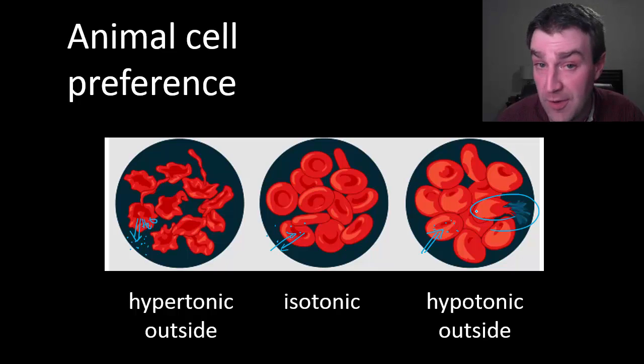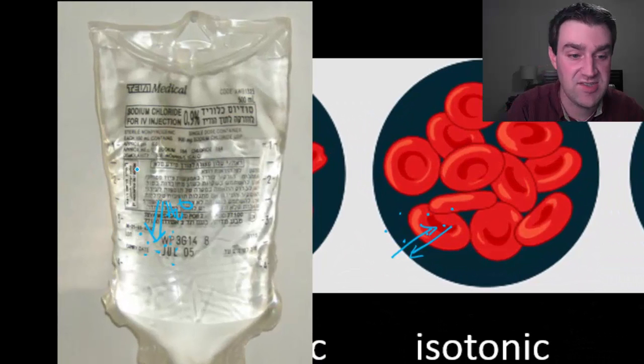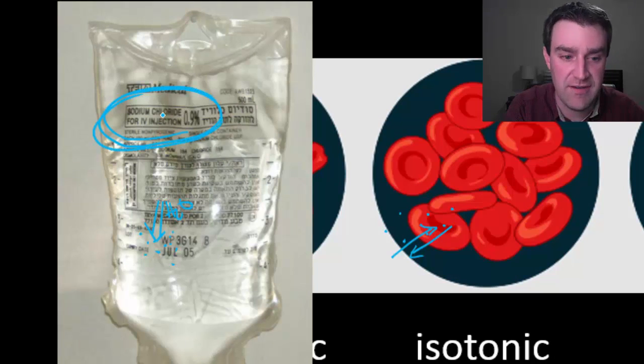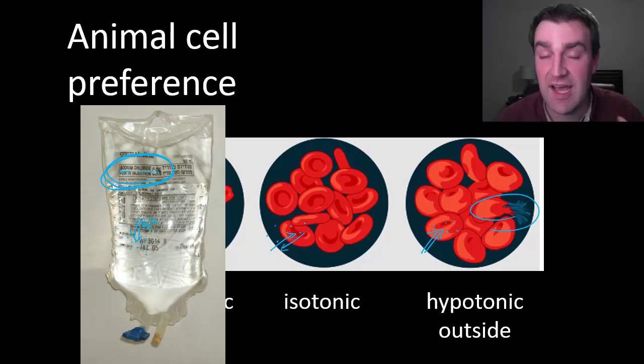This is important for medical purposes because when we're rehydrating patients we don't want to just put water through an IV tube directly into their bloodstream. We actually give them a saline solution. Notice here that it says it's about a 0.9 percent solution of salt or sodium chloride. That's about what an isotonic solution is in our body.